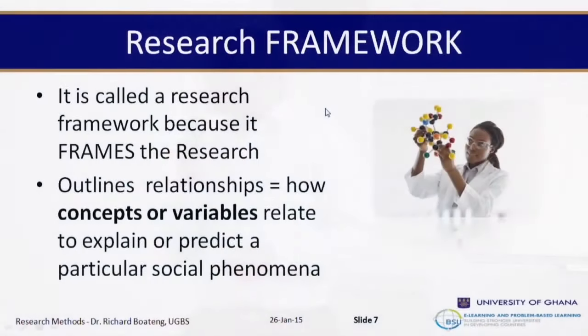For that particular research, those three factors determine the variables you will study and also determine what goes on your questionnaire. So if you frame the research around those three variables, you will not ask questions outside them. You might find other variables — for example, sociocultural practices that prevent people from working — but because you said those three economic factors are what you are studying, those three factors will guide your research questions. That is what a research framework does: it outlines how concepts and variables relate to explain or predict a particular social phenomenon.